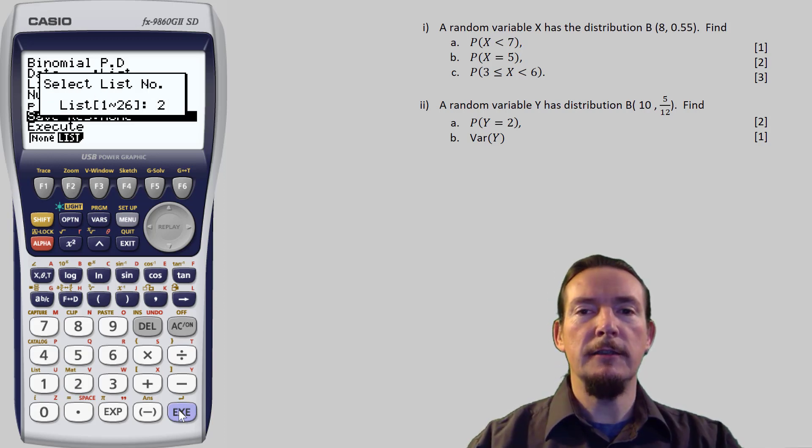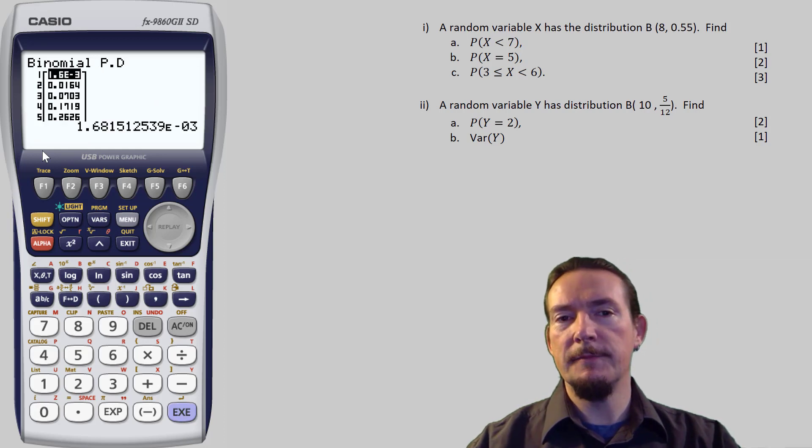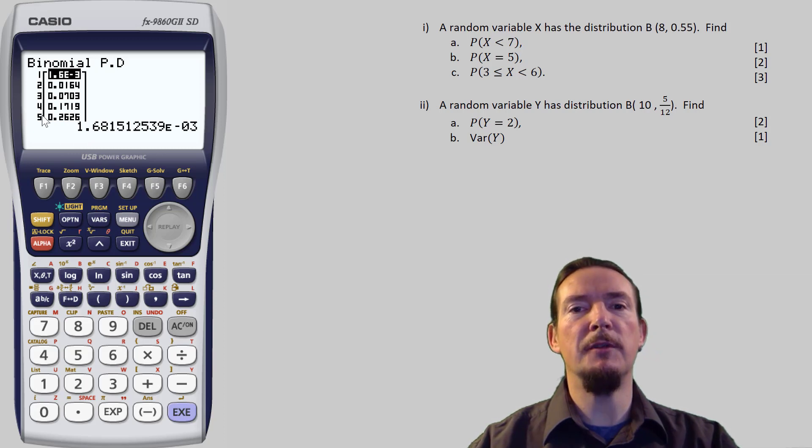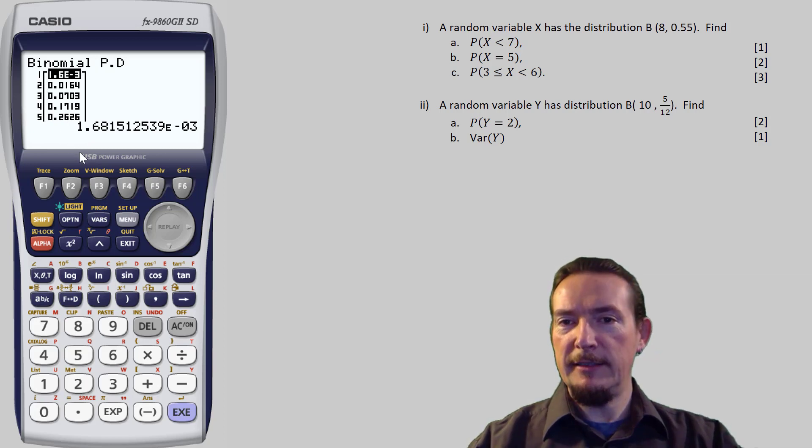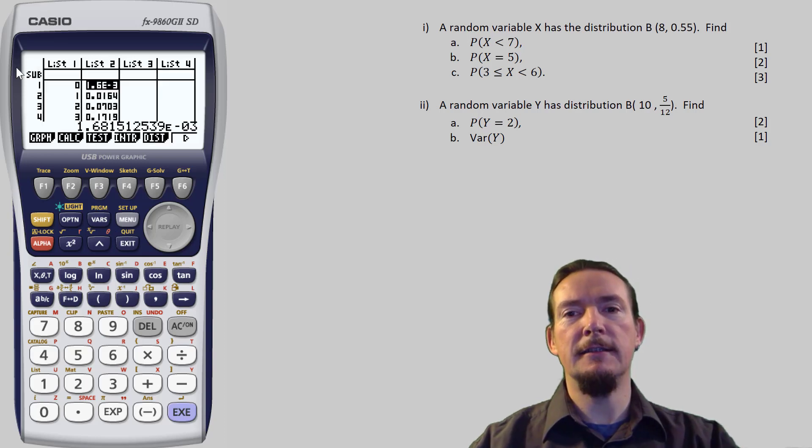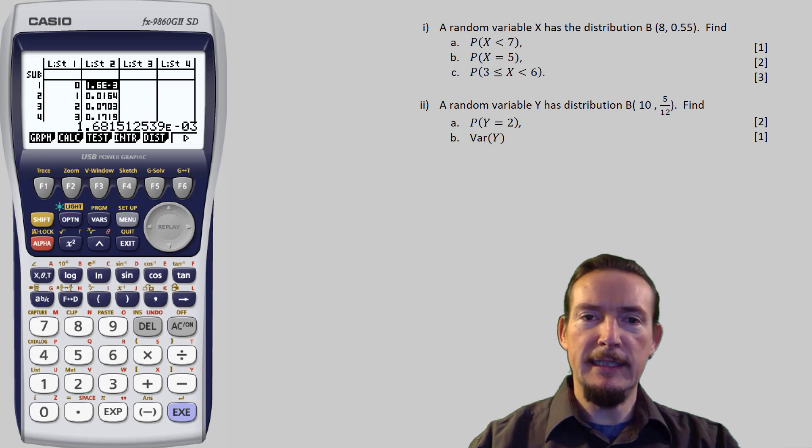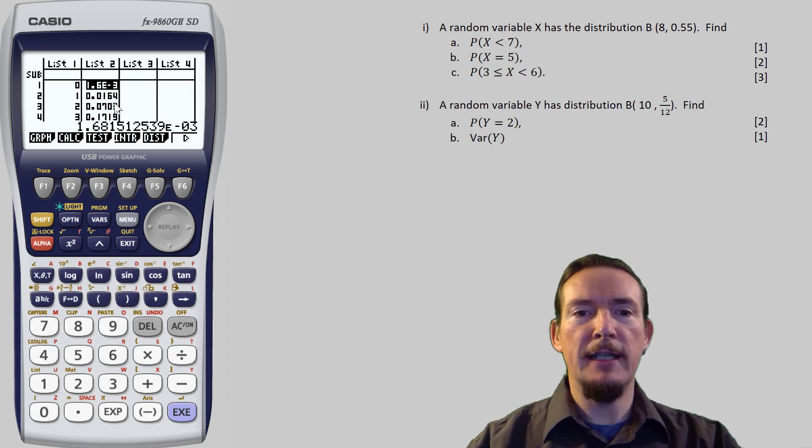So let's execute, and the calculator will now show all the probabilities. Take care here, because the numbers on the side start with 1 rather than 0, so they don't match up with the values of x. Better to look at the results in the data table, so press exit and exit to go back to this. Now we can see list 1 has our random values of x, and list 2 now has all the associated binomial probabilities.